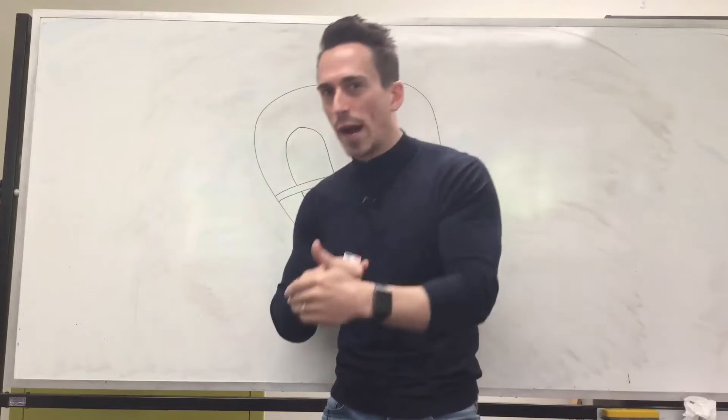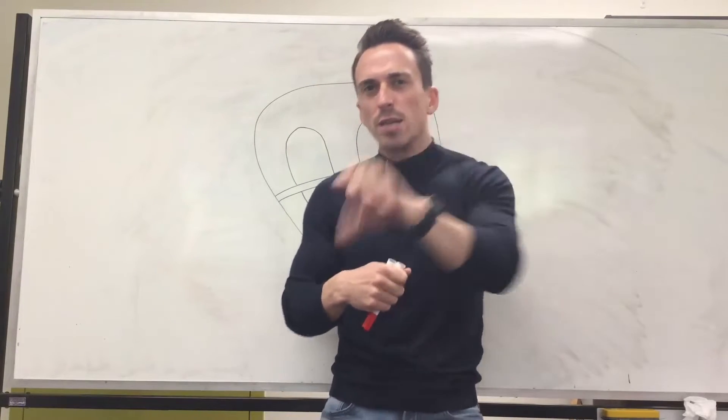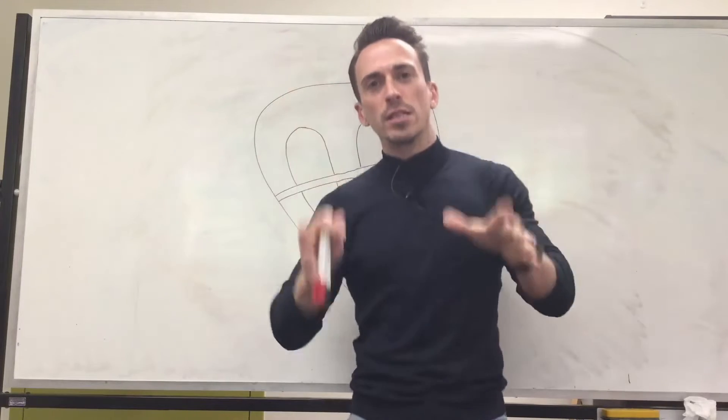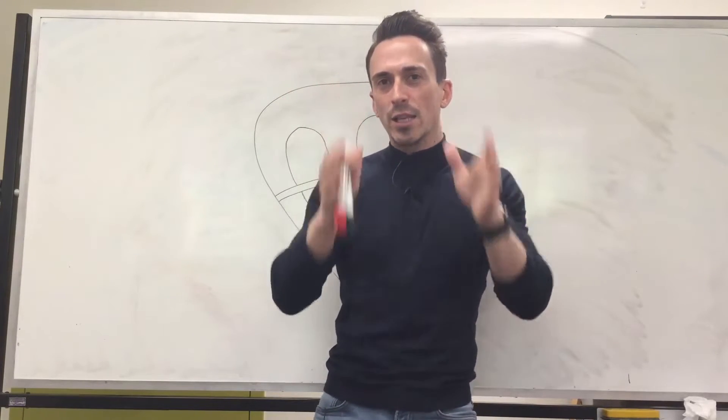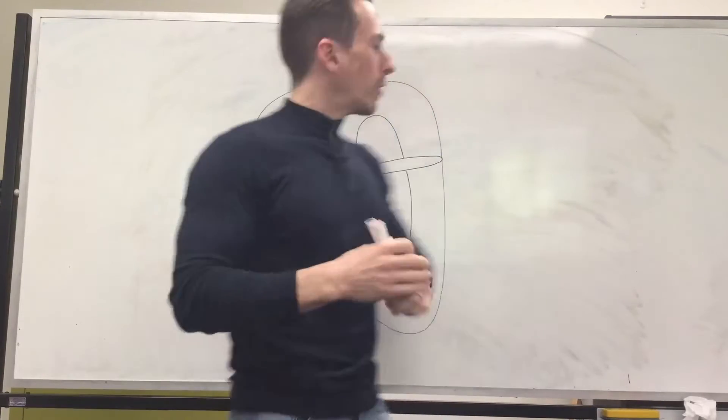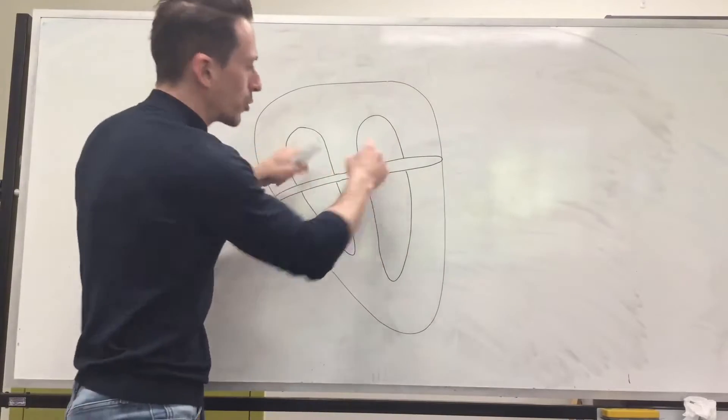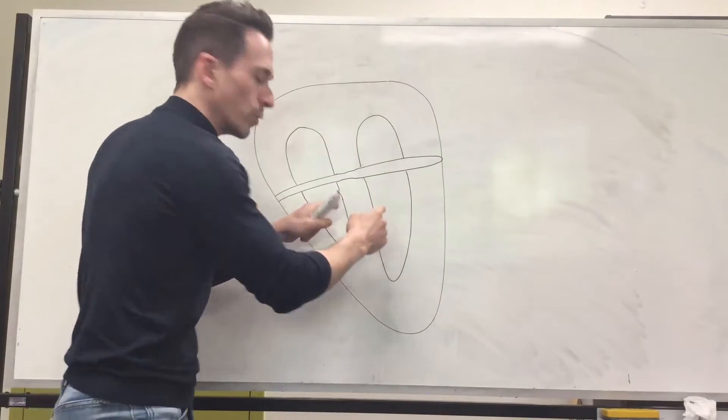Now in order for a heart to beat it must contract, and in order for a heart to contract it needs electrical stimulus telling it to contract. So this video is talking about that electrical stimulus, what we term the neural conduction of the heart. Now what I've drawn up here is a heart and you can see the four chambers of the heart,